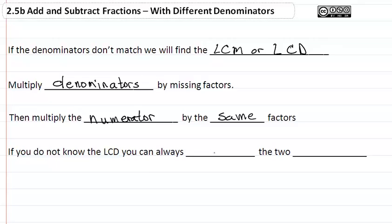If you do not know the LCD, you can always multiply the two denominators, but that's not ideal. Usually we want the LCD to keep our numbers from getting too big.